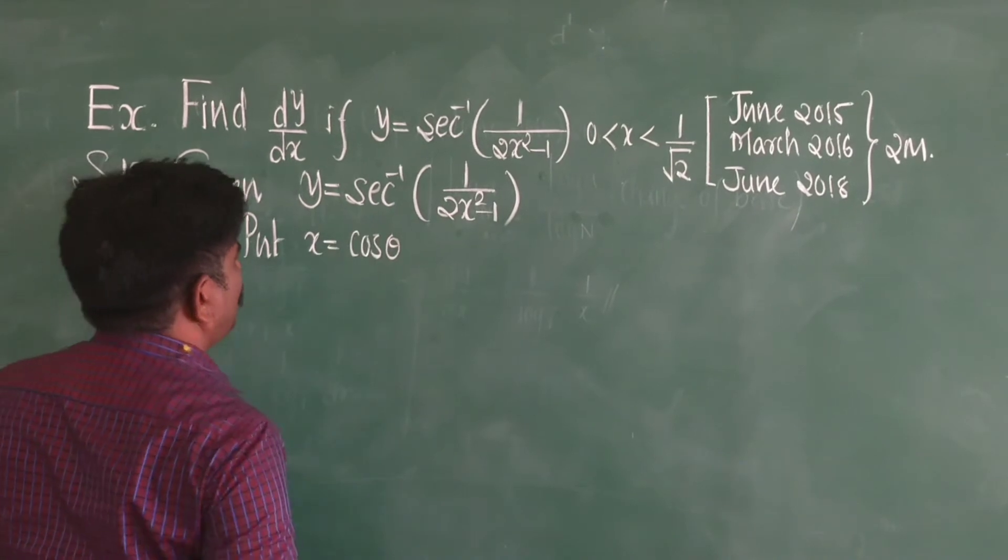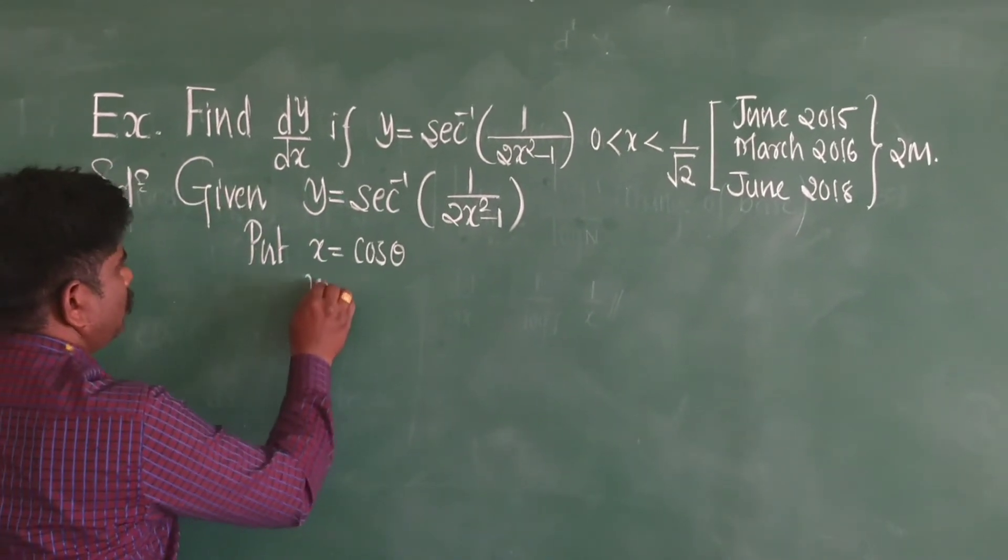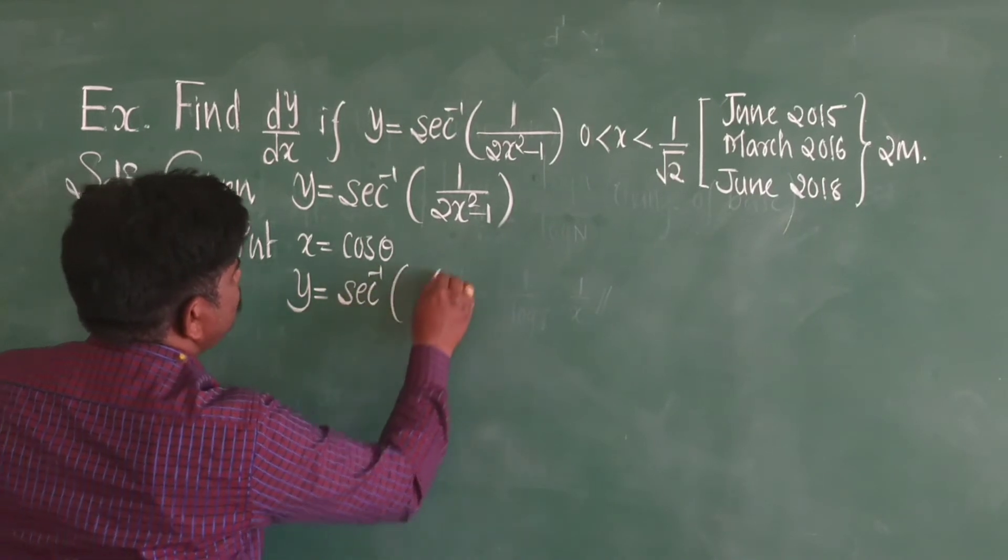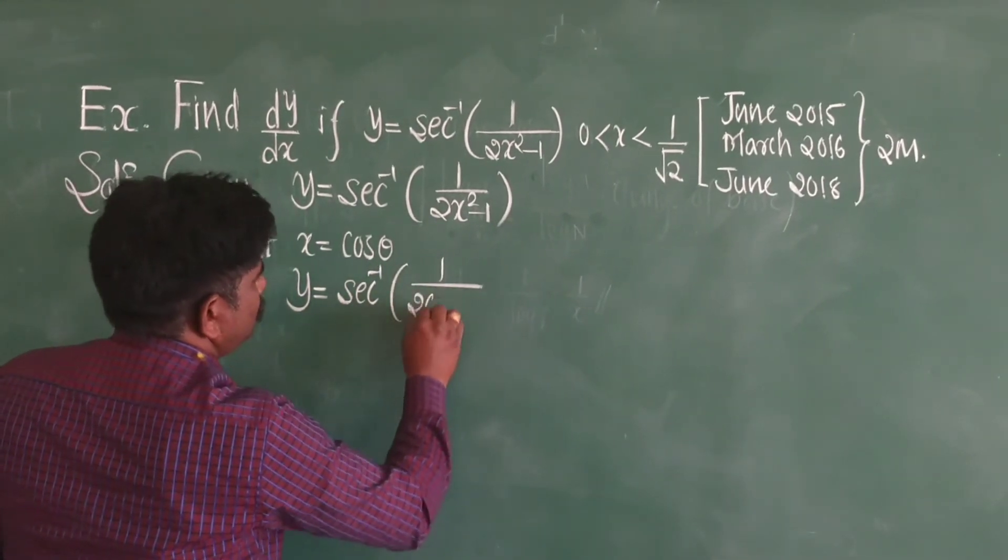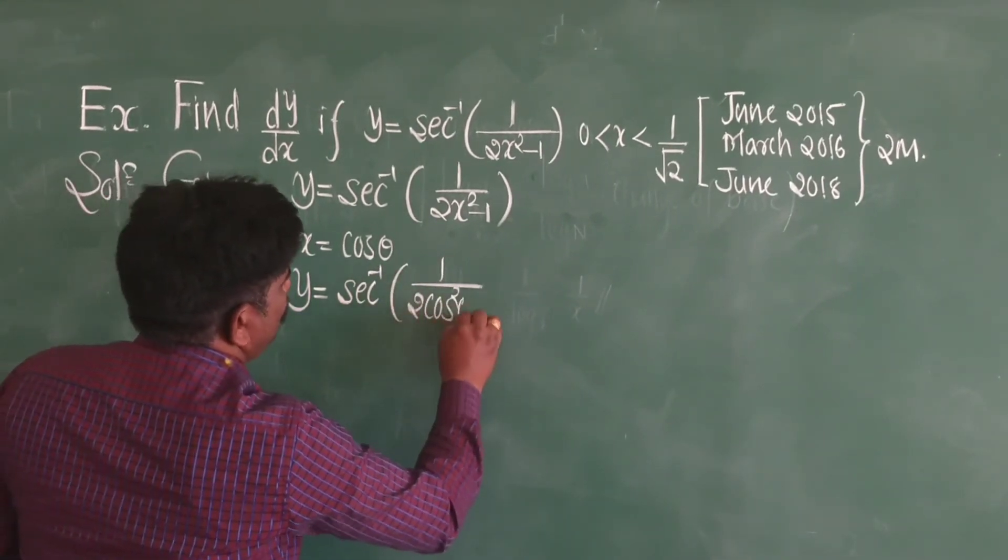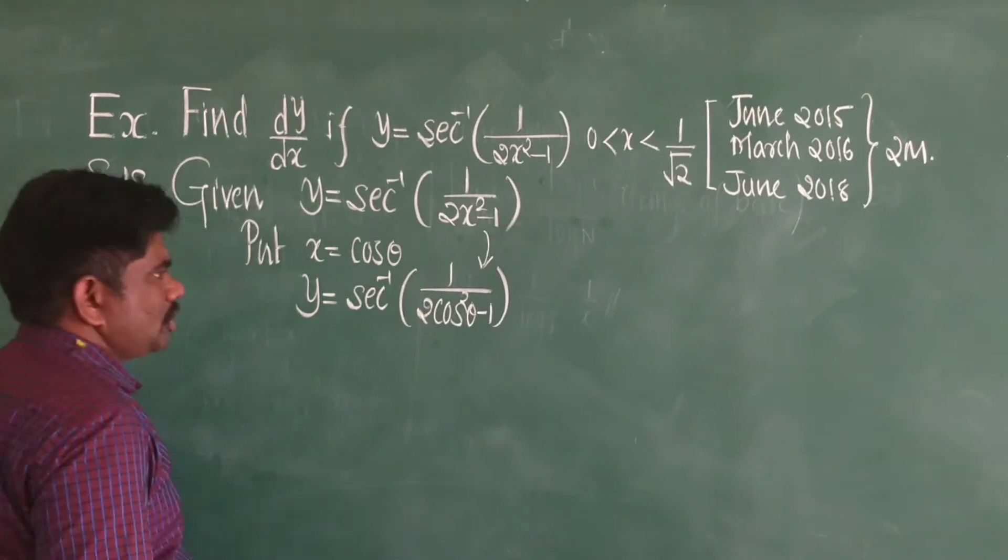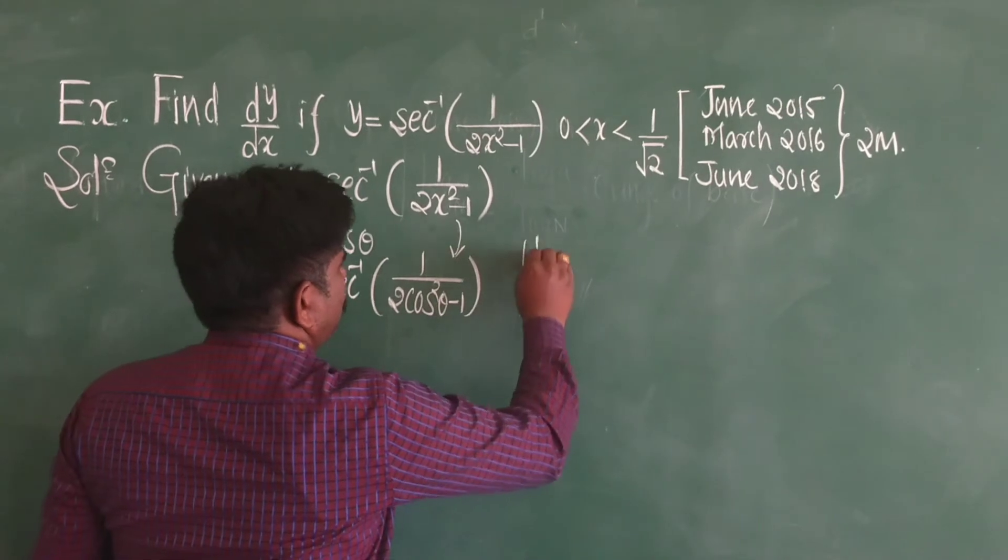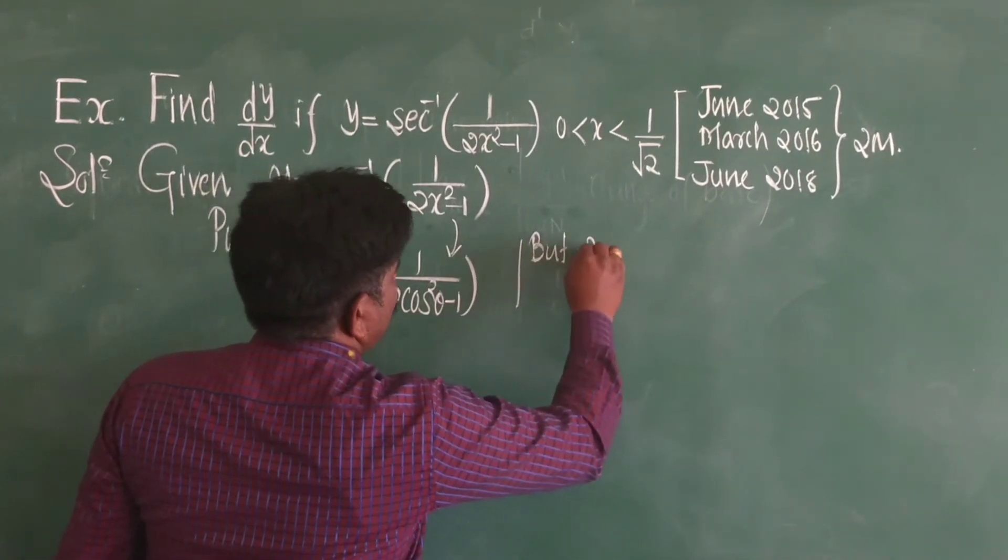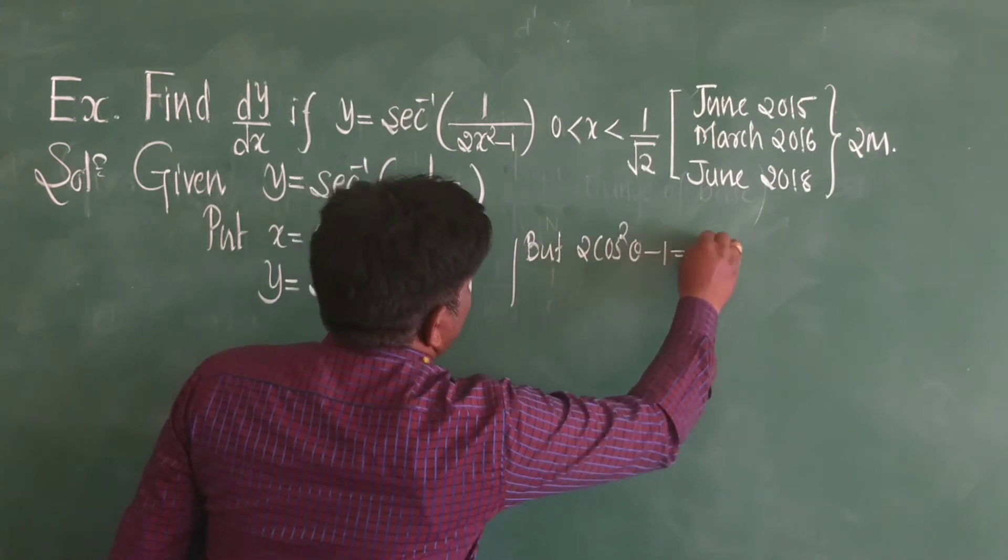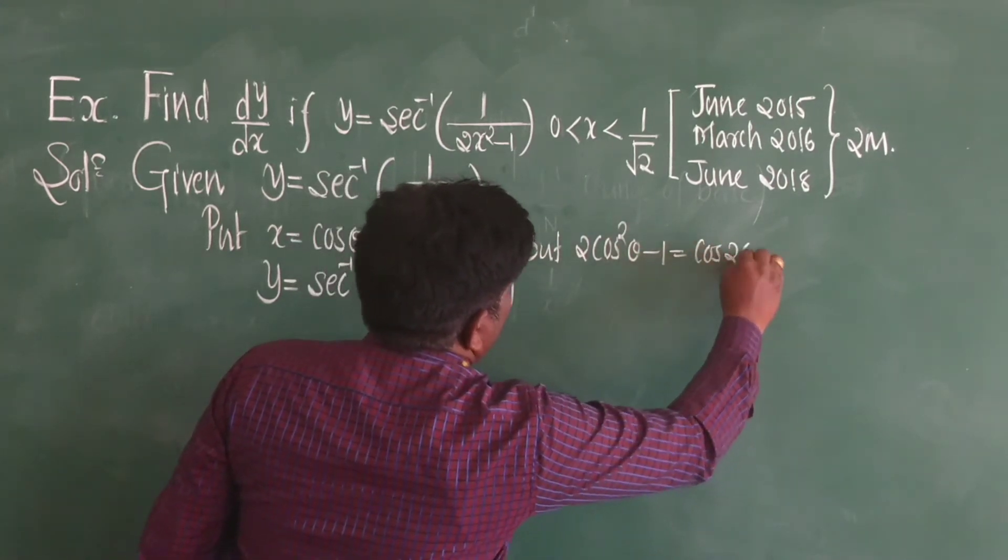I am putting x equals cos theta into that now. So y is equal to sec inverse of 1 upon 2 cos square theta minus 1. It has reduced, but 2 cos square theta minus 1 is cos 2 theta.